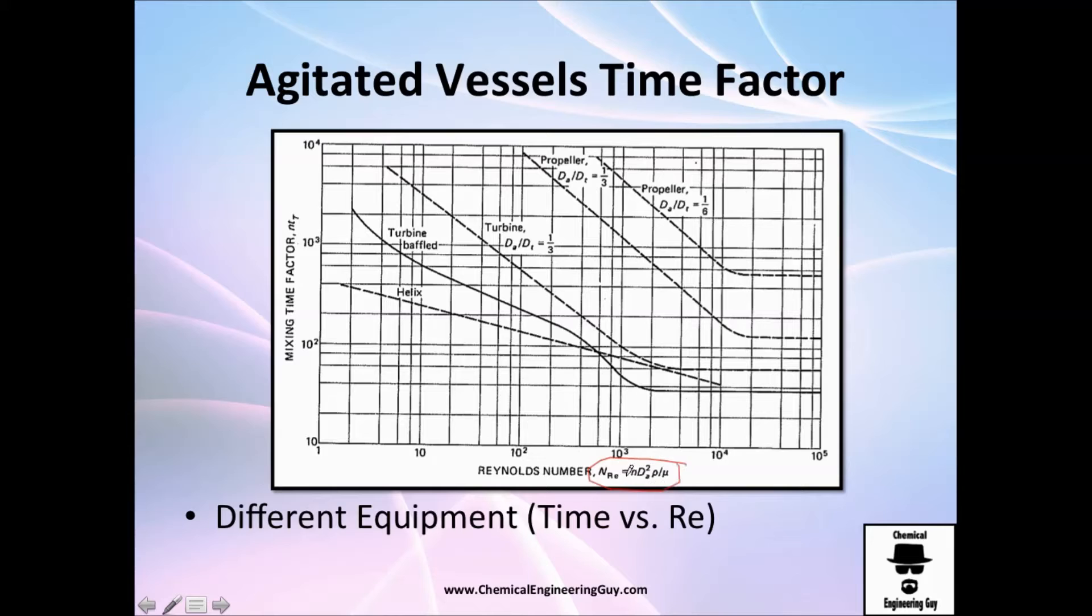So the only thing you want to calculate is Reynolds number. Once you get the Reynolds number, go and find it here. Find your mixing time and the mixing factor. Of course, if you already know the number here, you should know the angular velocity.